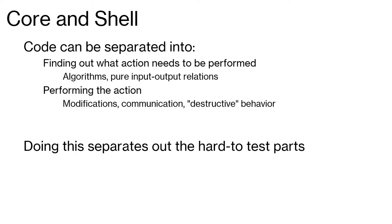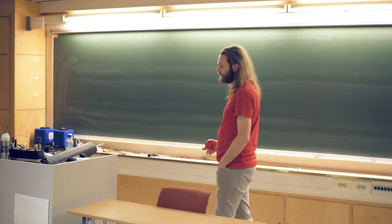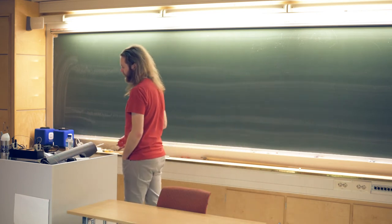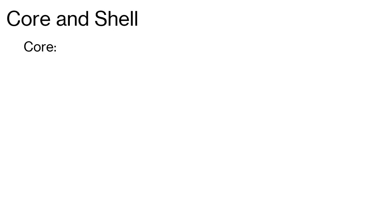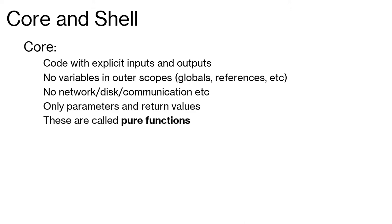By performing this separation, we can isolate the hard-to-test parts. The 'performing the action' part is hard to test, but now we can put all of our algorithms and decisions into easily testable parts and isolate them. These core functions will always have only explicit inputs and outputs — no variables in outer scopes, no network, no disk, no communication to other threads, no global variables, only parameters and return values. These functions are what we would call pure functions. The things that modify the outside world are usually called side effects.